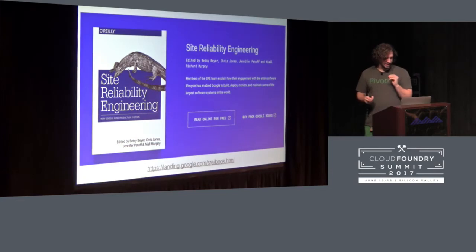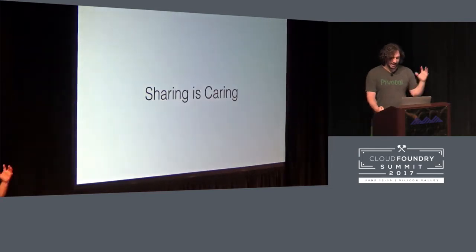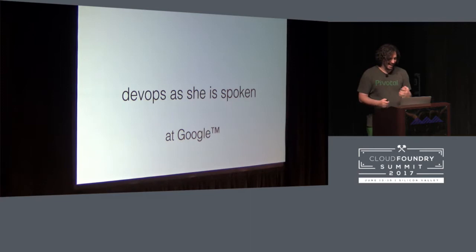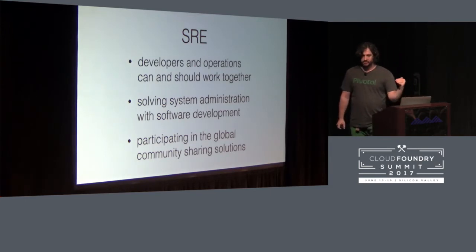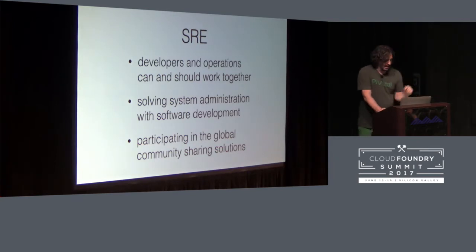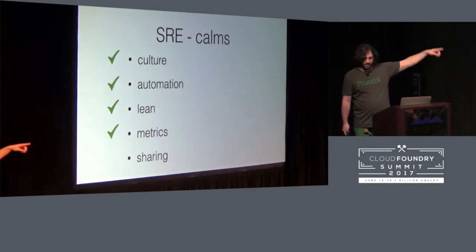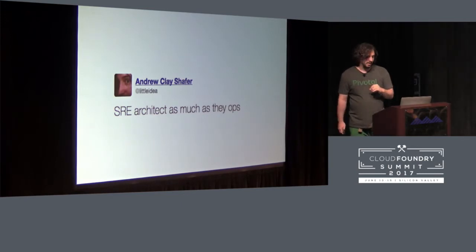Let's talk about the Site Reliability Engineering book. You can read it for free — Google has given this book as a gift to the world, because sharing is caring. This gives you DevOps as practiced at Google. When I gave this talk at Google Next, Google SREs came up and thanked me. I say developers and operations can and should work together. SRE at Google is a software engineering role, and they are participating in the global community sharing solutions. Going back to the five pillars, all of these are represented in that book.